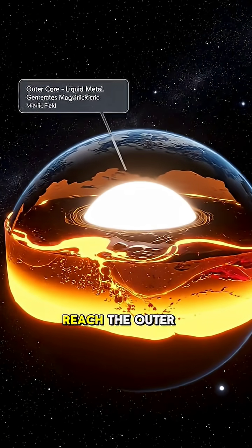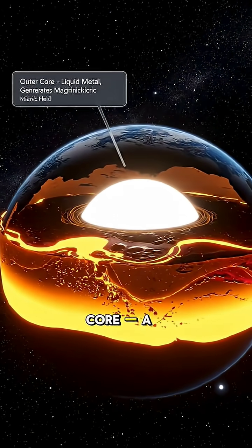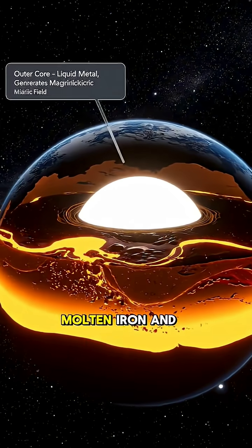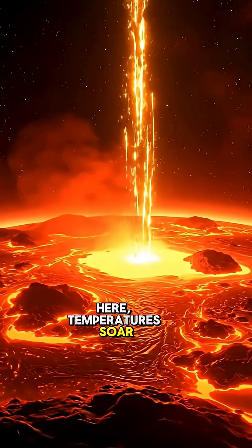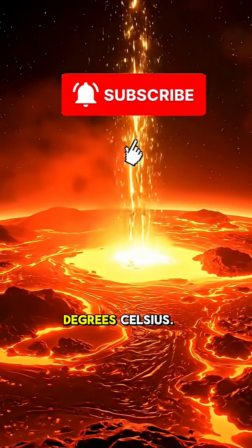Deeper still, we reach the outer core, a churning ocean of molten iron and nickel. Here, temperatures soar above 4,000 degrees Celsius.